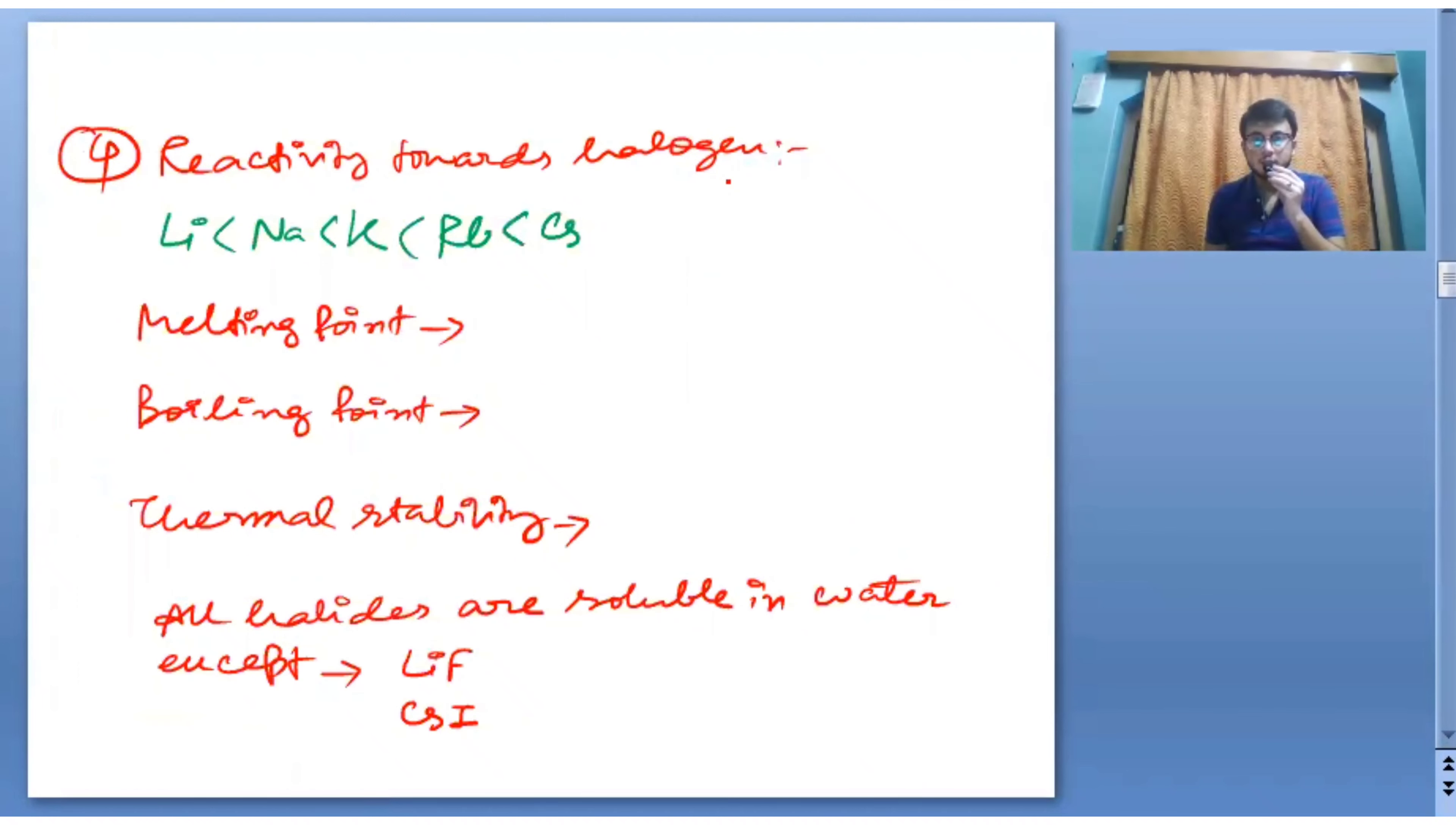Next is reactivity towards halogen. The order will be Cs greater than Rb less than K greater than Na greater than Li. Melting point, boiling point, and thermal stability all follow a certain order: LiCl is less than NaCl less than KCl less than RbCl less than CsCl.